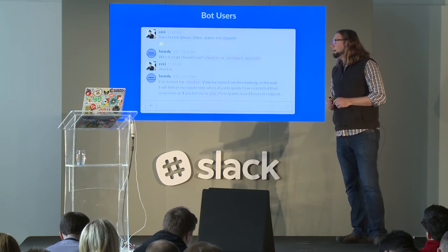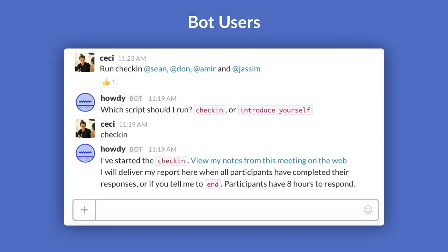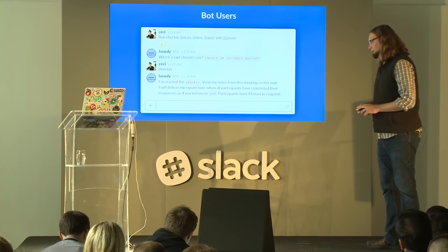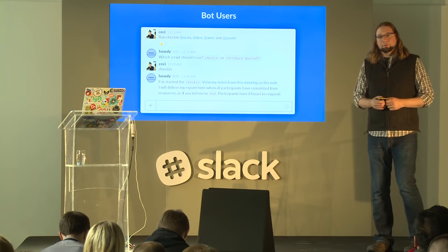Here's an example of a bot called Howdy, by one of our partners also named Howdy. The bot runs stand-up meetings. Cece has requested to run a check-in meeting. Howdy asks what kind of check-in she'd like to run, then verifies the check-in is running, comes to each of us in a DM, asks what we've been up to, collects those reports together, and once it has all of them, reports back to Cece on our behalf with a nice summary of the day's activities in the channel. It doesn't take a whole lot of smarts to make this sort of thing work, but it's still really powerful and really useful.